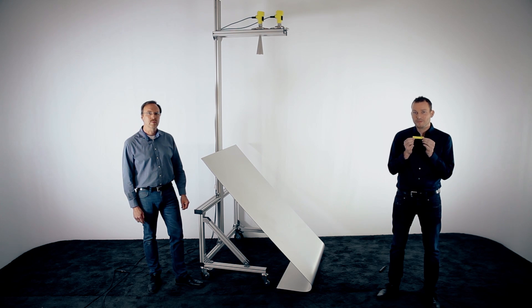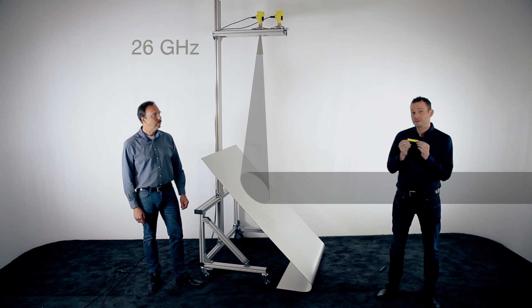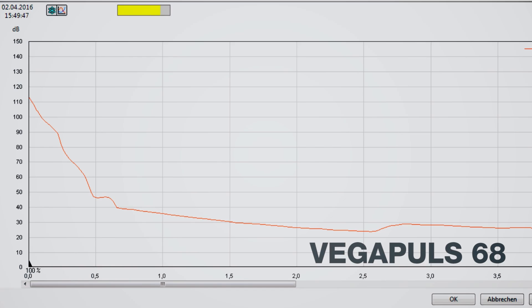We have now one small pack of sugar on the metal blade. So have first a look on the 26 GHz radar on the echo curve. On the echo curve you see no reflection because still all the energy is reflected to the side and we don't get an echo back from the level.